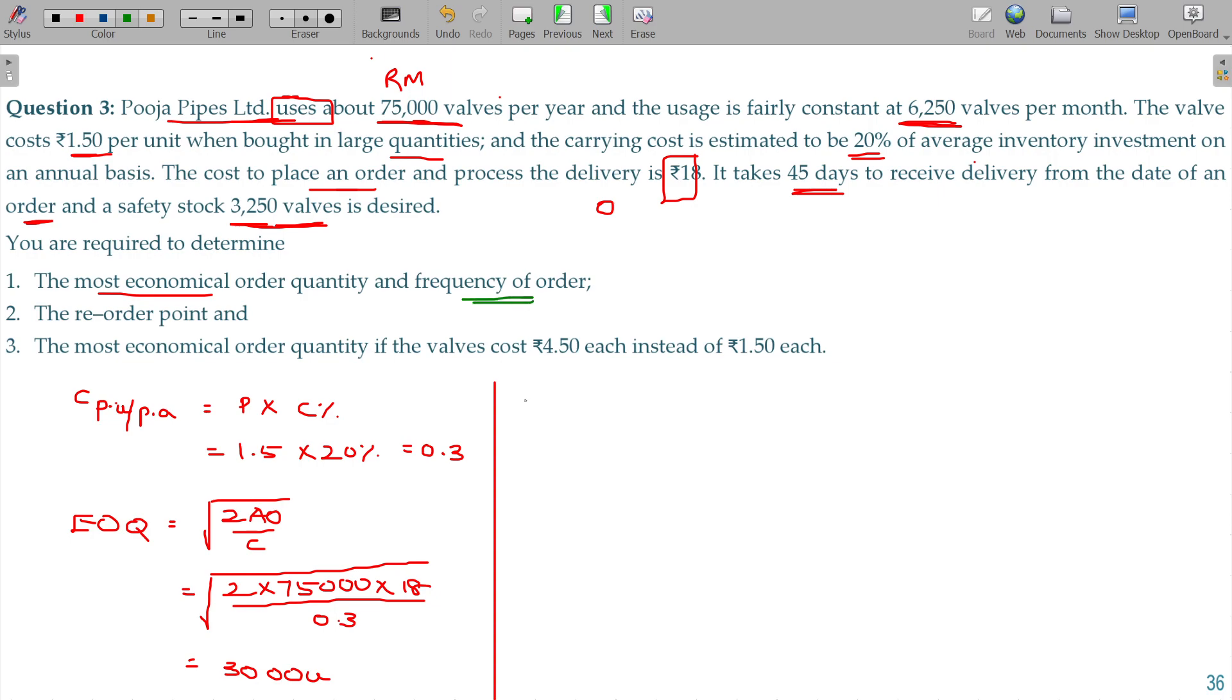Now we have to find out the frequency of order. Frequency of order is the time gap between two orders. Days or months in a year divided by number of orders.